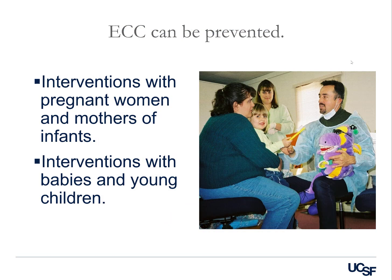Early childhood caries can be completely prevented. This is a disease of habit — primarily poor oral hygiene and not brushing teeth. If parents can help establish a good oral hygiene routine at home, brushing teeth in the morning and at night, and reduce the frequency and duration of sugar exposure as well as fermentable carbohydrate exposure, that can break down into glucose. Cariogenic bacteria such as Streptococcus mutans and Lactobacillus consume glucose, divide, form thick heavy plaque with lactic acid, drop the pH — and low pH is known to cause demineralization. That is the primary mechanism of caries formation.